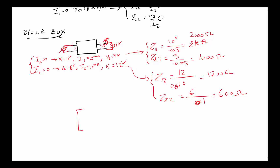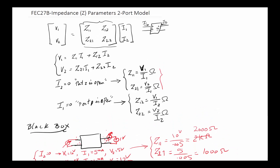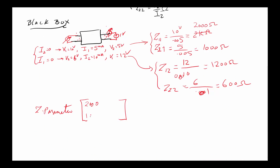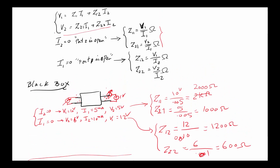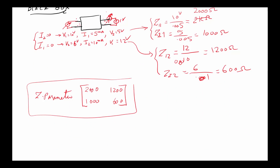Therefore the Z parameter matrix is: Z = [[2000, 1200], [1000, 600]] in ohms. With this matrix we can, for any given I1 and I2, find the corresponding voltages V1 and V2. That is the Z parameter black box approach.